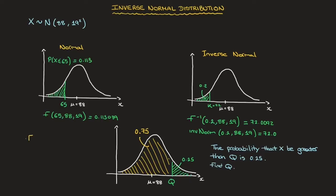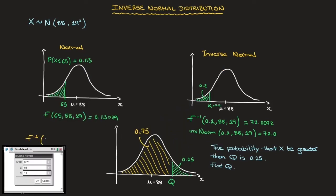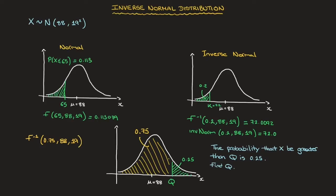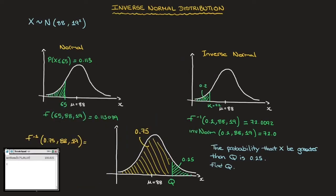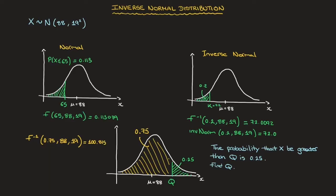Using the inverse normal function — F⁻¹ — with input value 0.75, mean 88, and standard deviation 19, we find using our calculators that equals 100.815. Rounding to three significant figures, that's 101. We can add that to our bell curve and state that q equals 101.